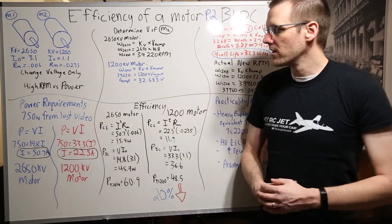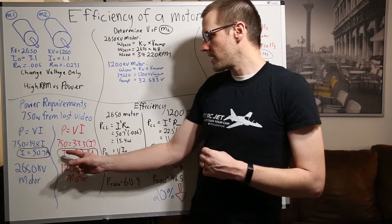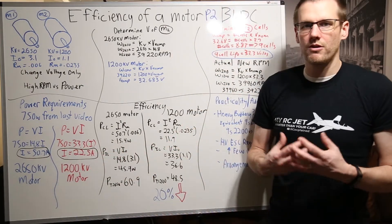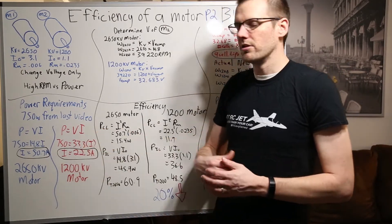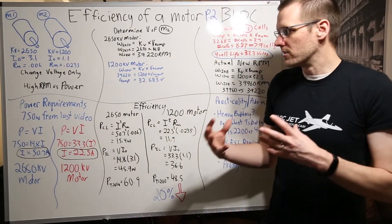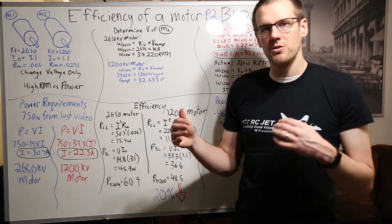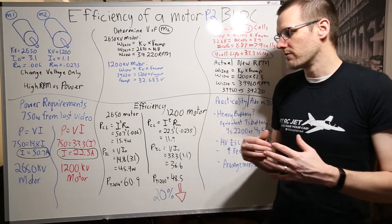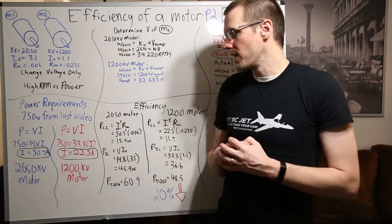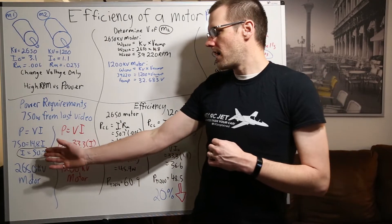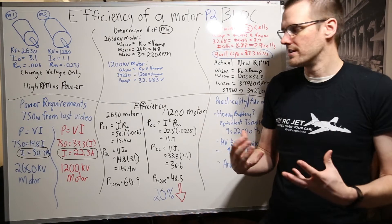We do the exact same thing for our 1200 kV motor and we get a total current output of 22.5 amps from the battery. So our motor is going to be pulling the 22.5 amps at 33.3 volts. You can see the big difference between these motors. One is operating at a high voltage and one is operating at a relatively lower voltage. However the current is the exact opposite. We have higher current on our higher kV motor and lower current on our lower kV motor. This does make sense.